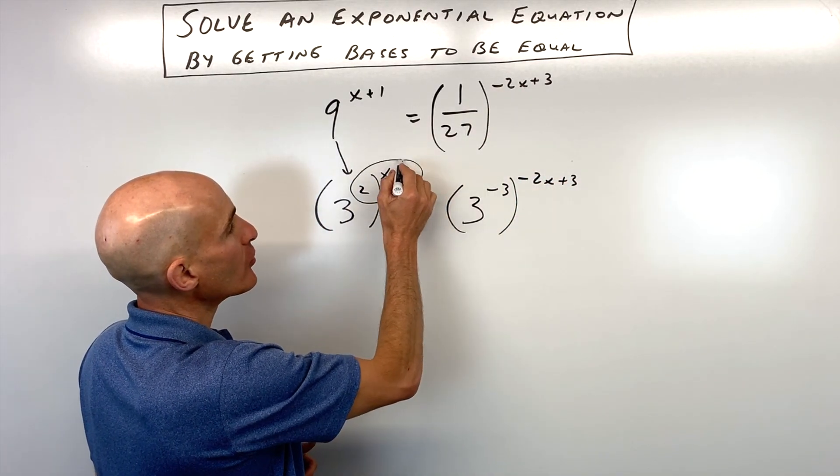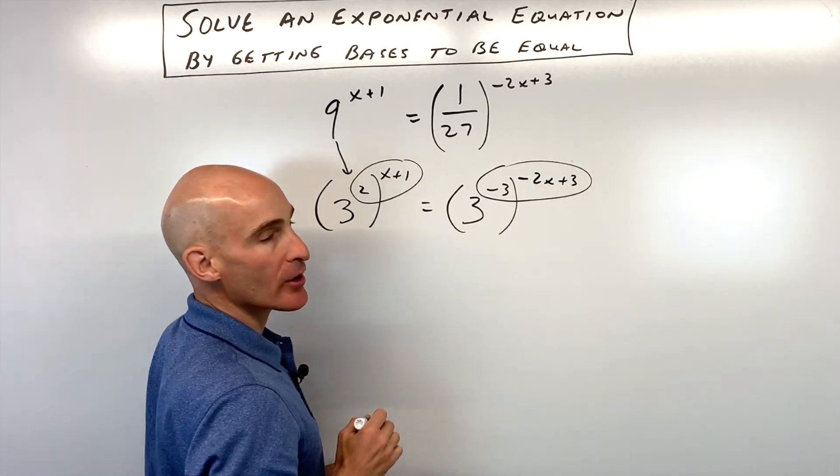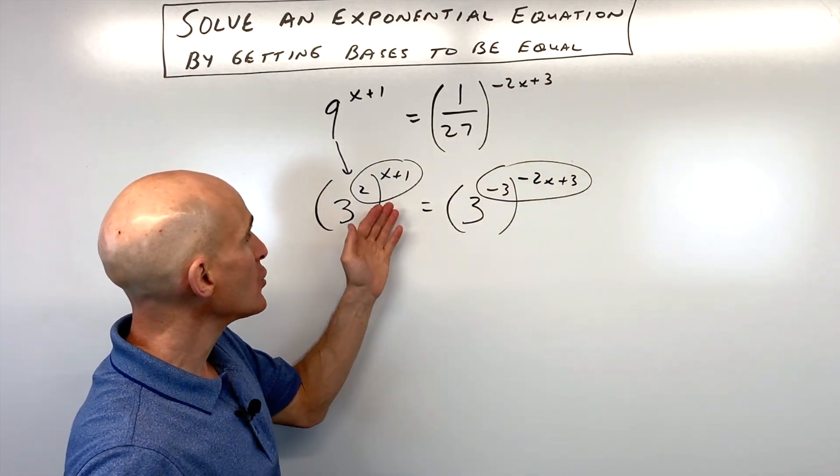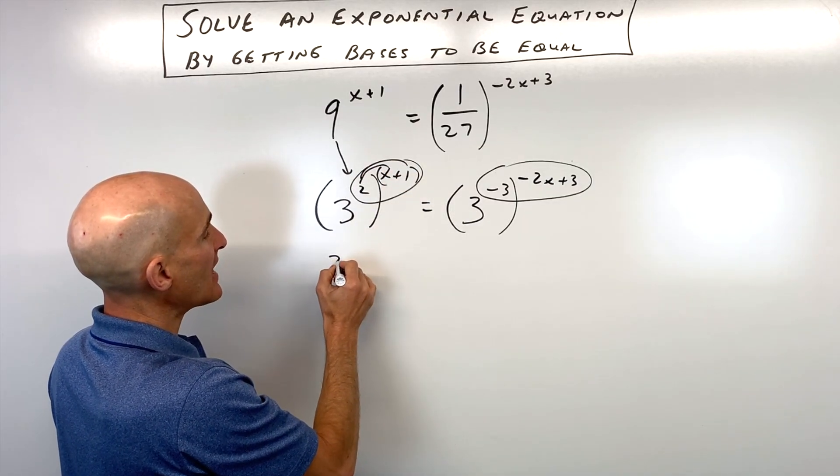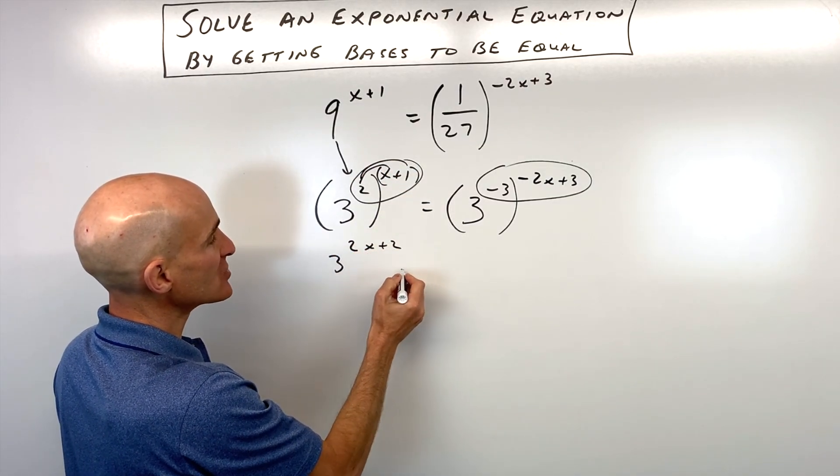What do you do when you have a power raised to another power, an exponent raised to another exponent? You multiply those exponents. Here you have to be careful, you're going to have to distribute the 2. So this is actually 3 to the 2x+2 power.